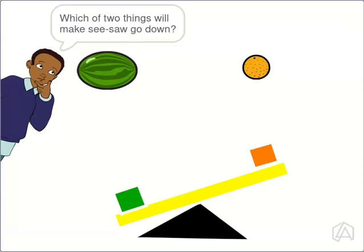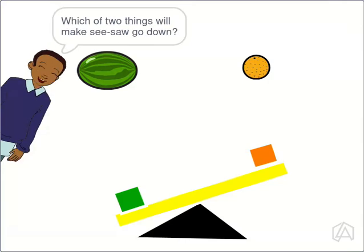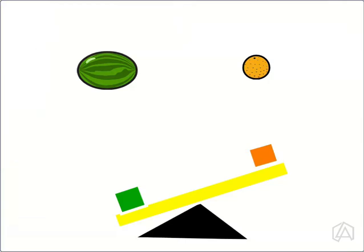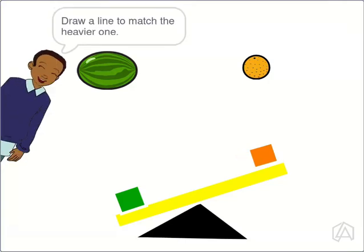Which of the two things will make the see-saw go down? Draw a line to match the heavier one.